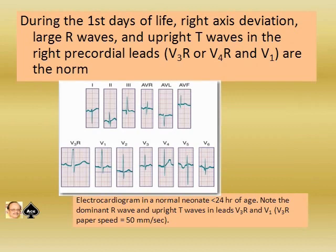During the first days of life, right axis deviation, large R-wave, and upright T-waves in lead V3R and V1 are normal findings. You can see in the picture shown — an electrocardiogram of a normal neonate less than 24 hours of age is shown here, with a dominant R-wave and upright T-wave in lead V3R and V1. The V3R speed is 50 mm per second.